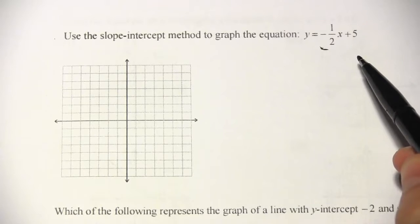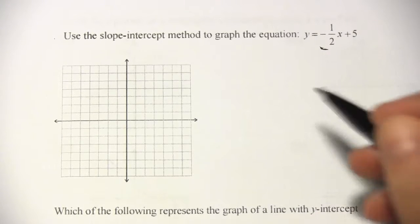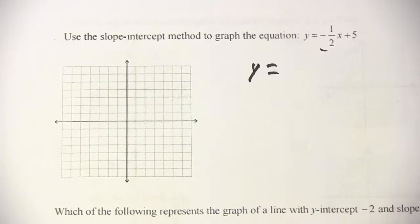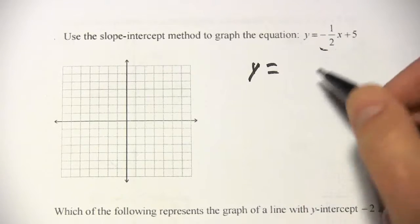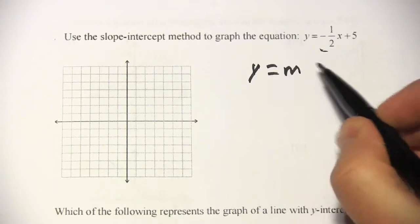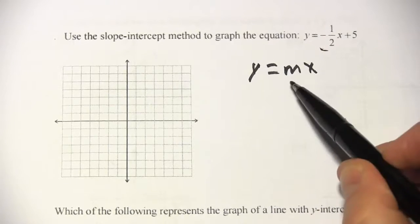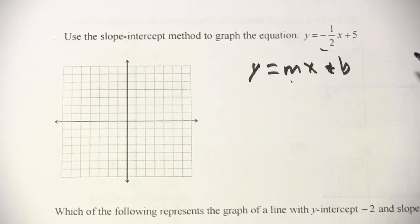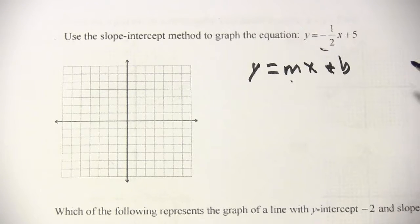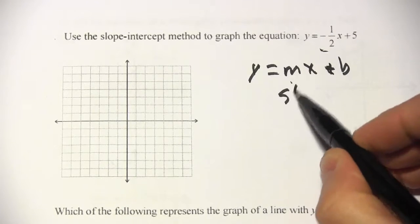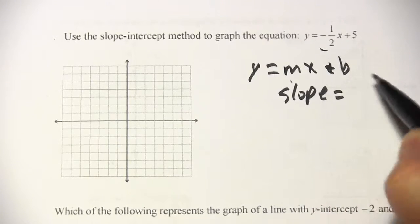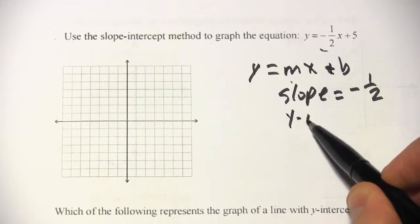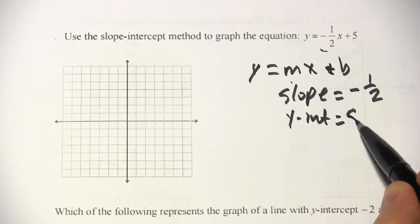Well, this equation is written in slope-intercept form. That's when you have y all on one side, all by itself, and then everything else on the other side. And when that's the case, the slope is whatever is multiplied by x. Slope is m, and the y-intercept is the number that's left over after the x-term. So in this case, the slope is negative one-half, and the y-intercept is 5.